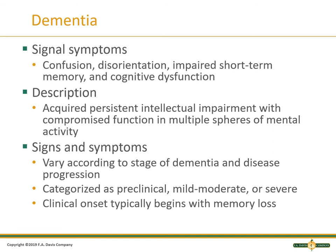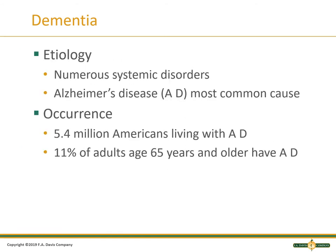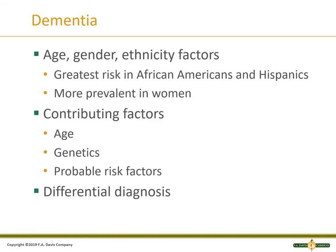We look at signs and symptoms, which are categorized. The clinical onset normally starts with memory loss — it can be mild, moderate, or severe. We look at numerous systemic disorders. Alzheimer's disease is the most common cause of dementia. Eleven percent of adults age 65 or older have Alzheimer's dementia, with the greatest risk factors in African American and Hispanic populations, and it is more prevalent in women.